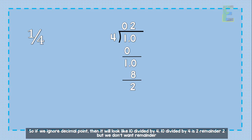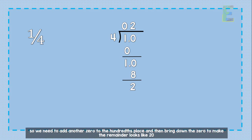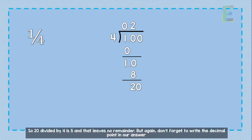But we don't want remainder. So, we need to add another 0 to the hundredths place and then bring down the 0 to make the remainder looks like 20. So, 20 divided by 4 is 5 and that leaves us no remainder.